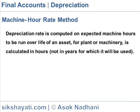The rate is computed as: Machine Hour Rate = (Cost of the machine minus scrap value) divided by effective working hours. This method does not consider depreciation when a machine is not in use. Example: original cost of a machine is 60,000 and estimated scrap value is 10,000.